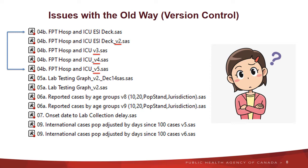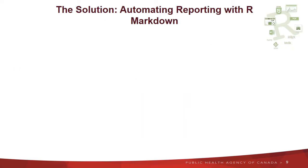In addition, the poor version control made it difficult for new team members to adapt when rotating into the team. To resolve these issues, the innovation team at PHAC introduced R to simplify, streamline, and make more efficient our processes. Multiple packages in R assisted with this effort, and the following slides will go through some of them.